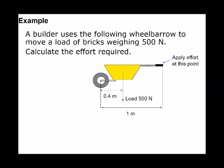Next example: a builder uses a wheelbarrow to move a load of bricks weighing 500 newton. To balance the wheelbarrow, a force F is applied upward. For the wheelbarrow to be balanced, the sum of clockwise moments must equal the sum of anti-clockwise moments.